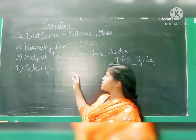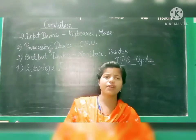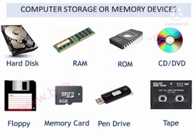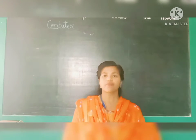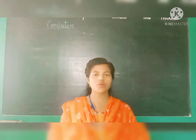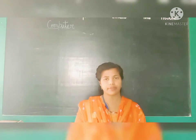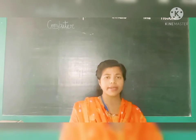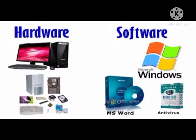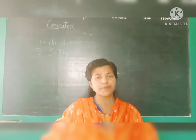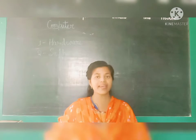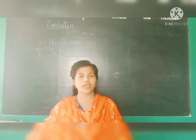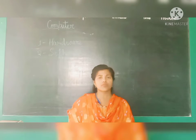The last device type is storage devices. The parts of a computer system — such as monitor, keyboard, printer, mouse, speaker, and microphone — are divided into two parts: hardware and software. The parts of a computer that we can touch or feel are called hardware, such as monitor, keyboard, mouse, speaker, and microphone.